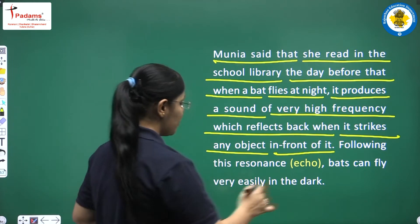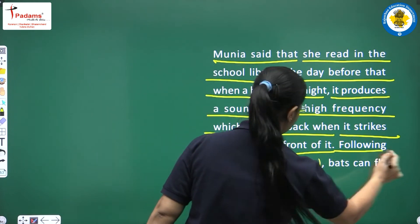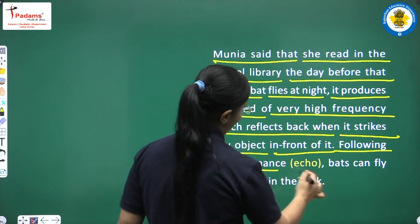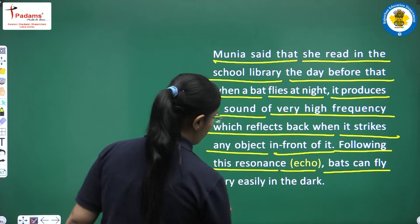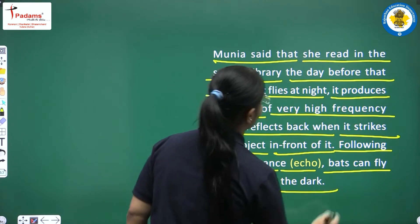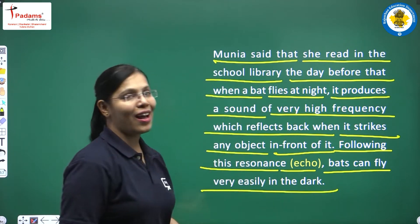Following this resonance or echo, bats can fly very easily in the dark.